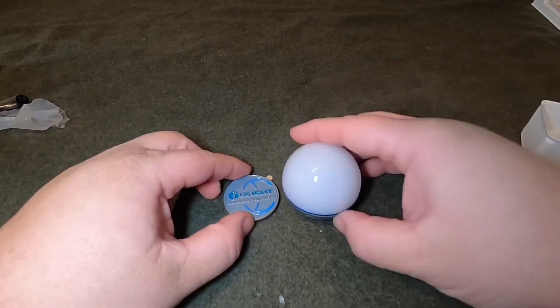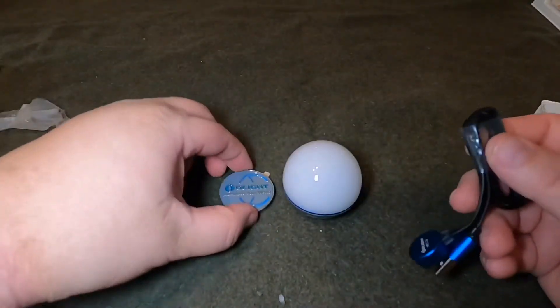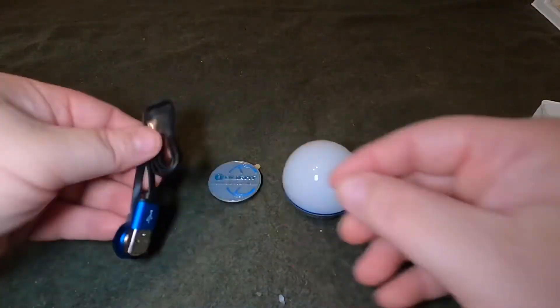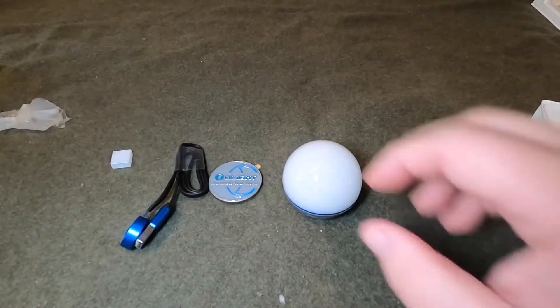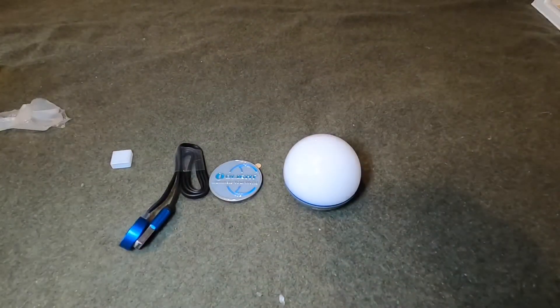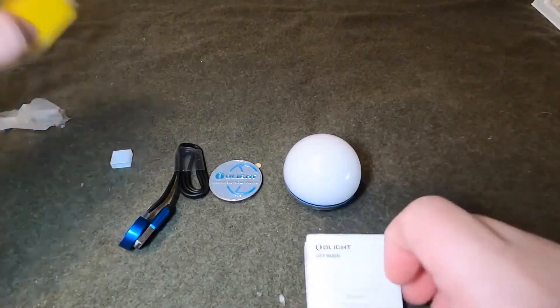So lay out what you get in the package here. You get the charger, the medallion, and the charge cable, the medallion, and the O-bulb, and then other assorted packaging and literature.